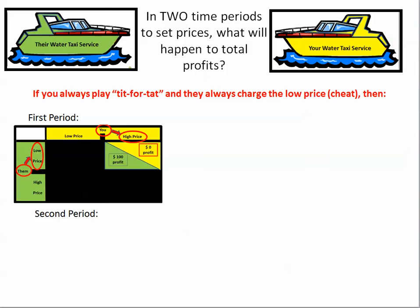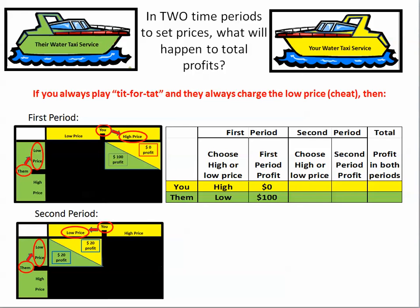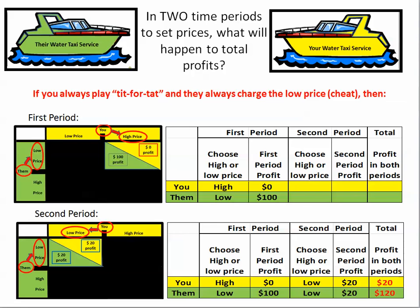Let's say you always play tit-for-tat and they always cheat by charging the low price. In the first period, they charged low while you took the high road — you got nothing and they got everything ($100). In the second period, you do what they did last time, so you charge the low price too. Now you both get $20. Your total is $0 + $20 = $20. Their total is $100 + $20 = $120. Not bad for the cheater.